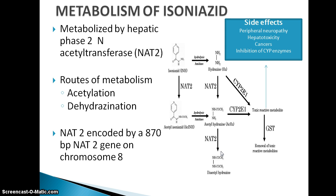Depending on the level of acetylation, in slow acetylators, isoniazid drug and its metabolites tend to accumulate, resulting in side effects such as peripheral neuropathy, hepatotoxicity, and cancers. Isoniazid also inhibits CYP3A4 and CYP2C19 activity.